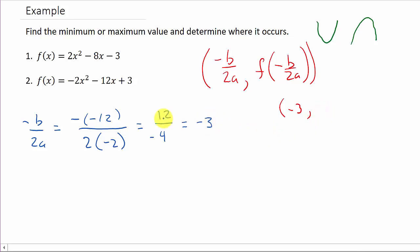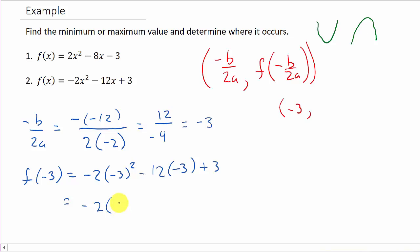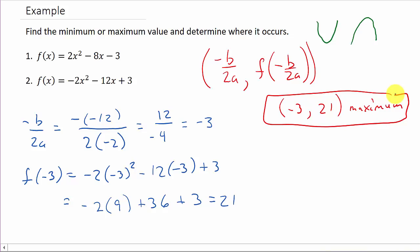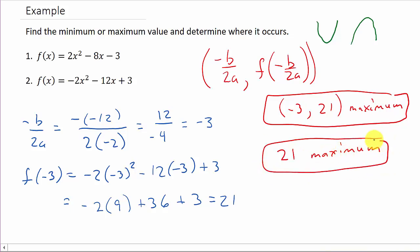To find the y-coordinate, we plug in x equals negative 3. f of negative 3 equals negative 2 times negative 3 squared minus 12 times negative 3 plus 3, which is negative 2 times 9 plus 36 plus 3, giving us negative 18 plus 36 plus 3, which equals 21. The y-coordinate is 21, and this is a maximum. If they just want the y-value, you give them 21 and say it is a maximum. I hope the video helped — check out my other videos, give a like, share, and subscribe. Thanks for watching.